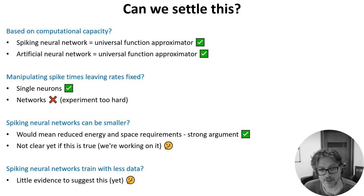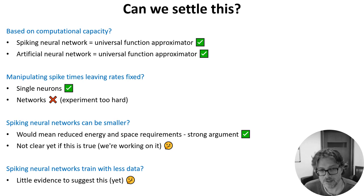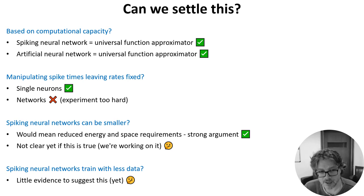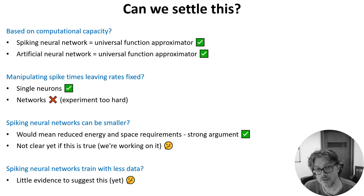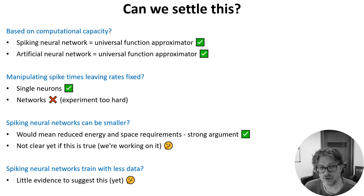And finally, maybe spiking neural networks need less training data. This really would be a dramatic difference. It's possible that temporal sparsity or thresholding will be important for that, but I haven't seen anything that's convinced me of this yet. If I had to guess right now, I'd say that the most likely outcome is that the brain primarily uses spiking to reduce resources — both energy and space — and that the optimal way to learn with minimal data will turn out to be neither spikes nor rates, but something we haven't imagined yet. Maybe one of you will discover it.